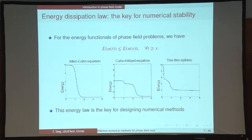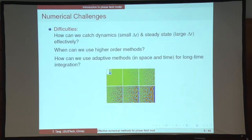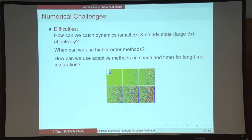To conclude the first part, I'll mention the numerical challenges. First, how can we catch dynamics and steady state effectively? For some parts we might use a small time step, but when energy has settled toward a steady state, we want a larger delta-t. When catching dynamics we want a smaller delta-t. This adaptive time-stepping is the first challenge.